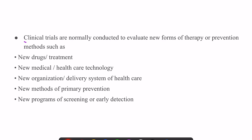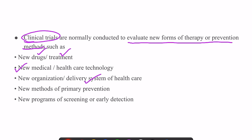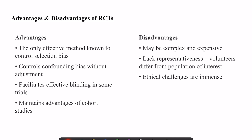Moving to why clinical trials are conducted. Clinical trials are usually conducted to evaluate new forms of therapy or prevention methods, which may be a new drug, new form of surgical or other treatment, new technology, new delivery system of healthcare, methods of primary prevention, or programs of screening or early detection. All these interventions can be evaluated in clinical trials.